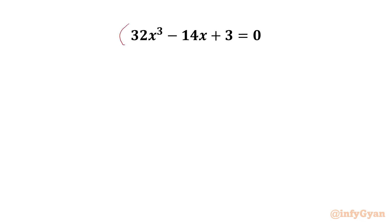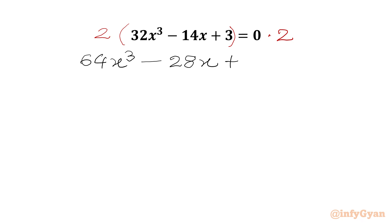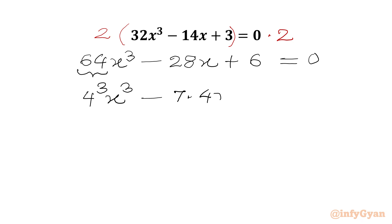I will multiply our equation by 2 on both sides. Now we have to expand the LHS. 2 times 32 is 64, then we have x³, minus 2 times 14 is 28 times x, plus 2 times 3 is 6, equal to 0. Now we can write 64 as 4³, and 28 as 7 times 4, so we have 4³ · x³ minus 7 times 4x plus 6 equal to 0.